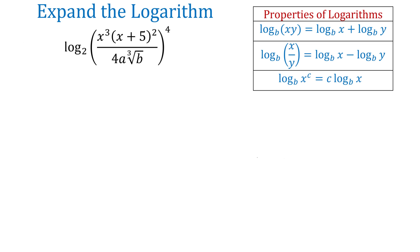To expand this logarithm, we will use the product, the quotient, and the power rules. In the product rule, the logarithm of a product x times y is expanded as a sum of two logarithms. So, log base b of x times y equals log base b of x plus log base b of y.